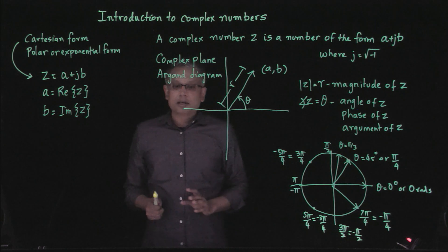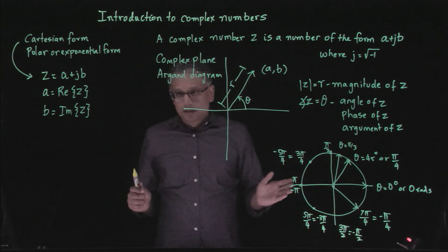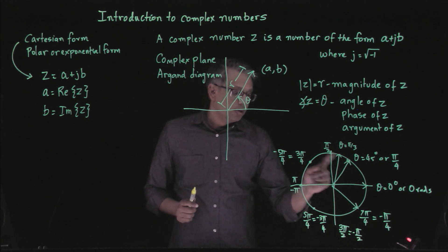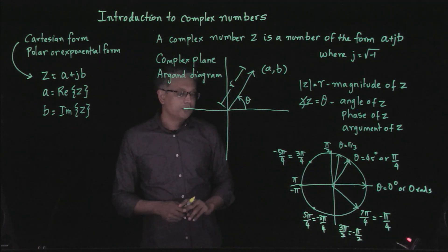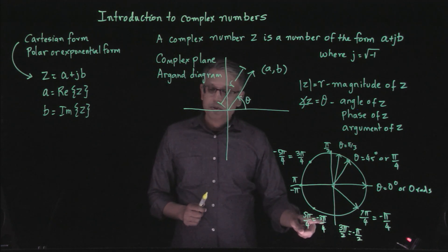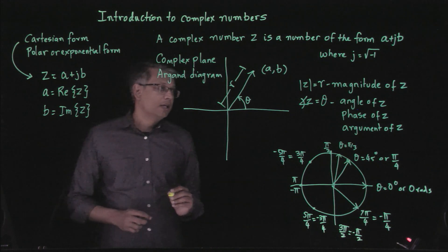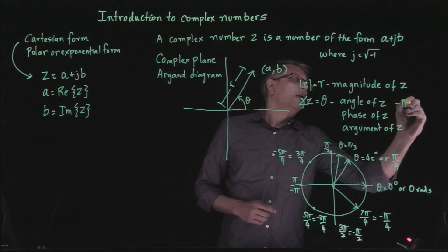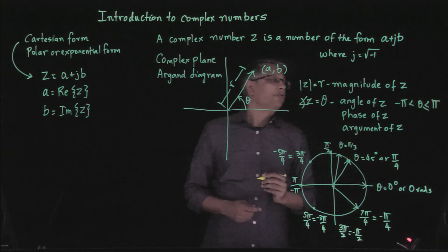We're going to use a convention where we represent angles such that they are either between 0 and pi, or between negative pi and 0. For example, we would prefer to use negative 3 pi over 4 instead of 5 pi over 4. So theta is going to be between negative pi and positive pi.